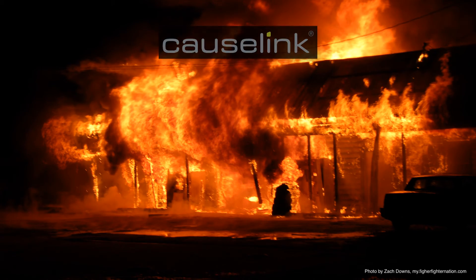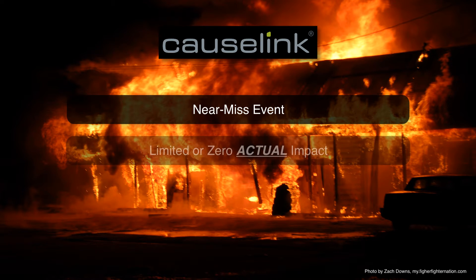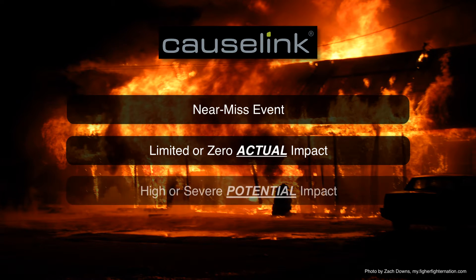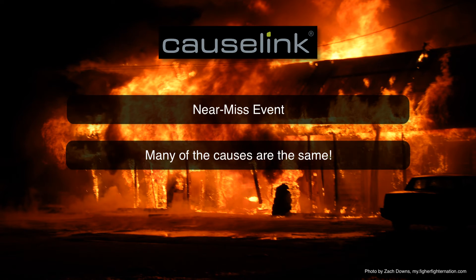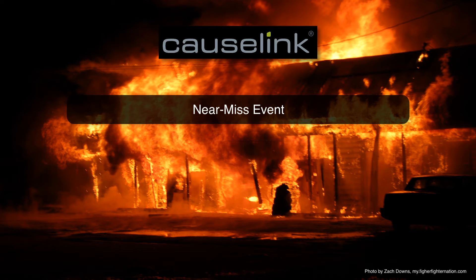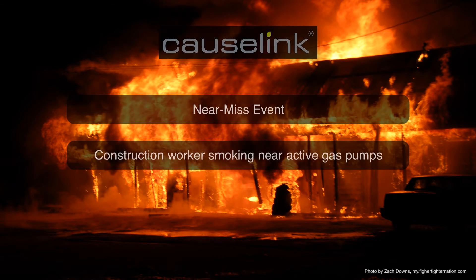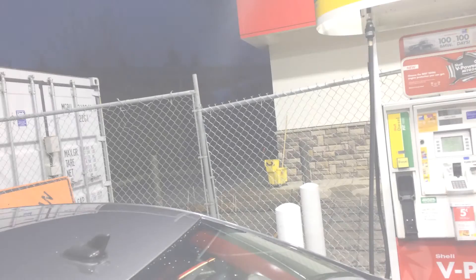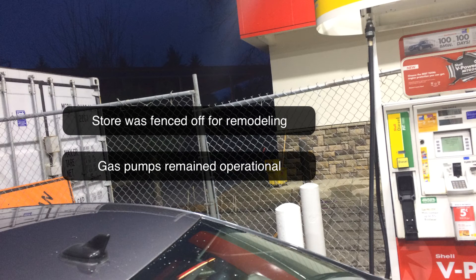This video is going to examine a near miss event. Near miss events are characterized as having limited actual impact but high potential impact. Analyzing near miss events can be very useful because many of the causes are the same as if an event with a worse outcome were to have occurred. The event we are going to analyze occurred when a construction worker was smoking a cigarette near active gas pumps. I noticed this when I was getting fuel one morning before work. The store part of the gas station was fenced off for a remodel job, but the gas pumps were left operational.